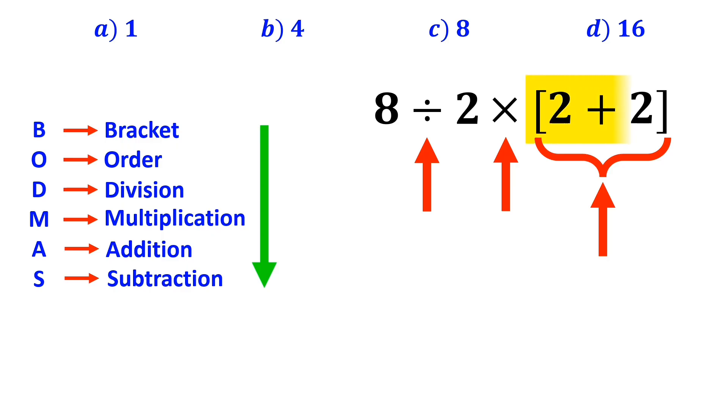So, we'll start with the bracket first, because it has the highest priority than the other operations. Okay, this expression simplifies to 8 divided by 2 times 4.